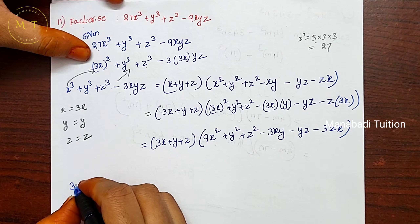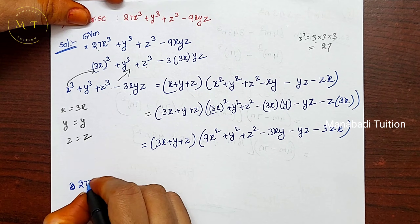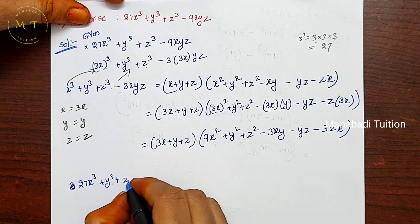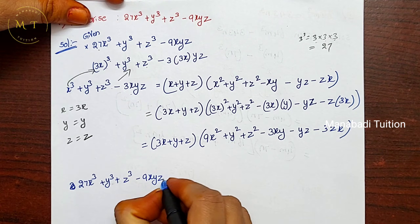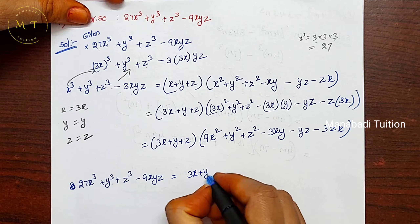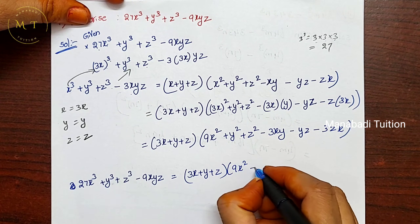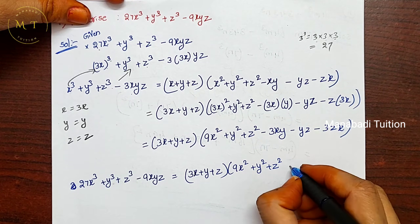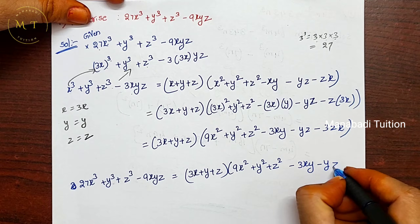So the factorised form is (3x + y + z)(9x² + y² + z² - 3xy - yz - 3zx). This completes question 11.